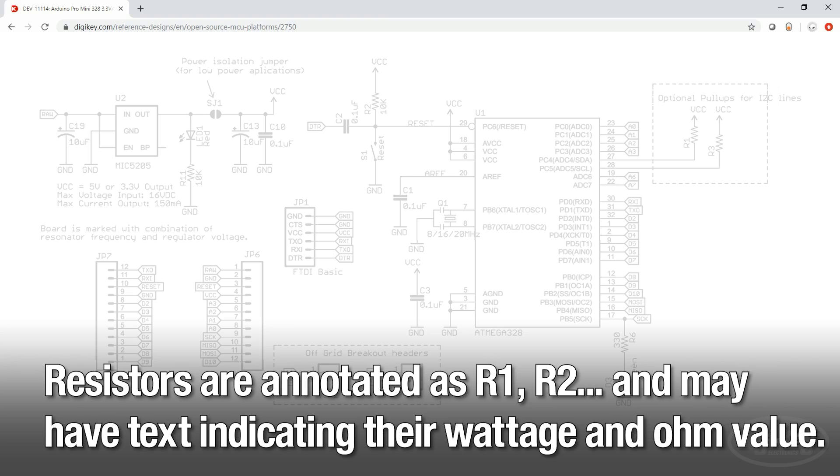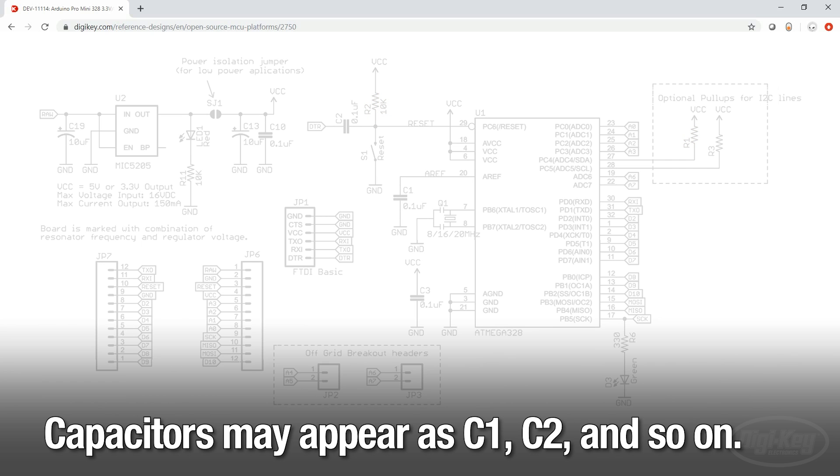Symbols on a schematic will have annotations called reference designators. Resistors are annotated as R1, R2, and so on, and may have text indicating their wattage and ohm value. Capacitors may appear as C1, C2, and so on.